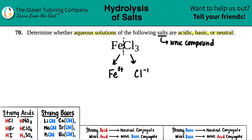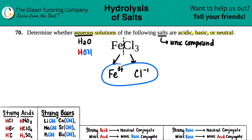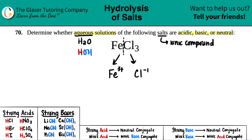Keep in mind that if these are aqueous, we have water, which gives us one hydronium and one hydroxide. Opposites attract: the positive hydronium wants to go with the negative chloride, so in this case that makes HCl.